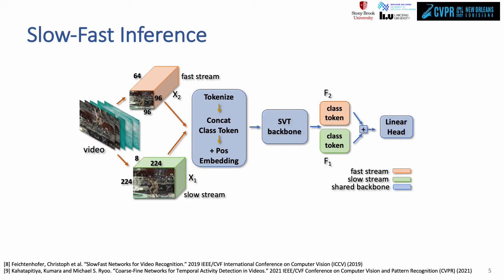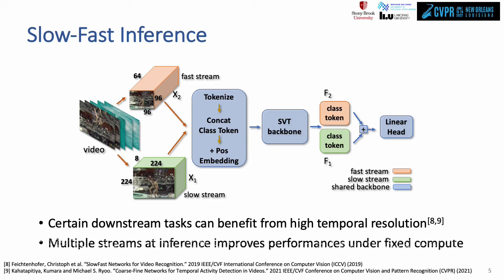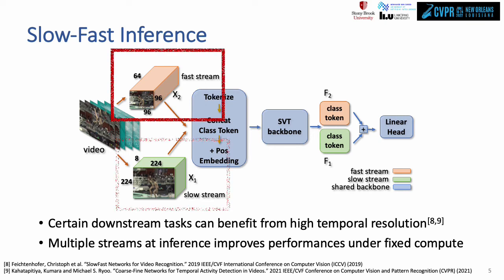During inference, we utilize this to process different resolution views in parallel using a common shared network, leading to performance improvements at fixed compute cost. The slow stream with high spatial resolution and the fast stream with high temporal resolution can extract complementary information.